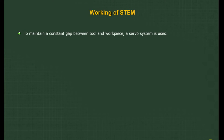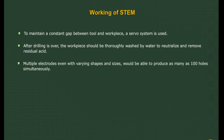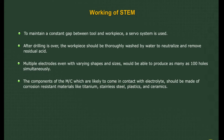To maintain a constant gap between tool and workpiece, a servo system is used. After drilling, the workpiece should be thoroughly washed with water to neutralize and remove residual acid. Multiple electrodes, even with varying shapes and sizes, can produce as many as 100 holes simultaneously. Components of the machine likely to come in contact with the electrolyte should be made of corrosion-resistant materials such as titanium, stainless steel, plastics, and ceramics.